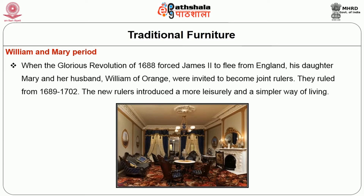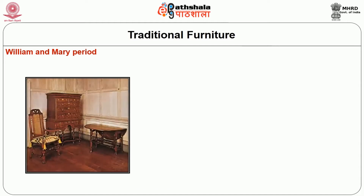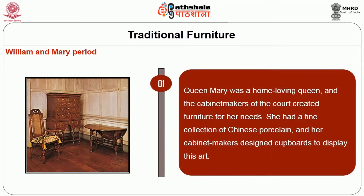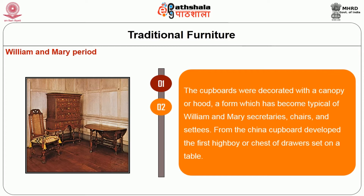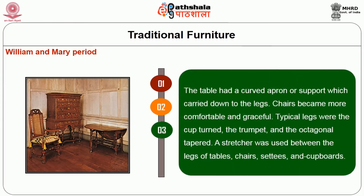The William and Mary period: when the Glorious Revolution of 1688 forced James II to flee from England, his daughter Mary and her husband William of Orange were invited to become joint rulers. They ruled from 1689 to 1702. The new rulers introduced a more leisurely and simpler way of living. Queen Mary was a home-loving queen and the cabinet makers of the court created furniture for her needs. She had a fine collection of Chinese porcelain and her cabinet makers designed cupboards to display this art, decorated with a canopy or a hood. From the china cupboard developed the first high boy or chest of drawers set on a table. Chairs became more comfortable and graceful; typical legs were cup-turned and trumpet, and the octagonal tapered. A stretcher was used between the legs of tables, chairs, settees, and cupboards.